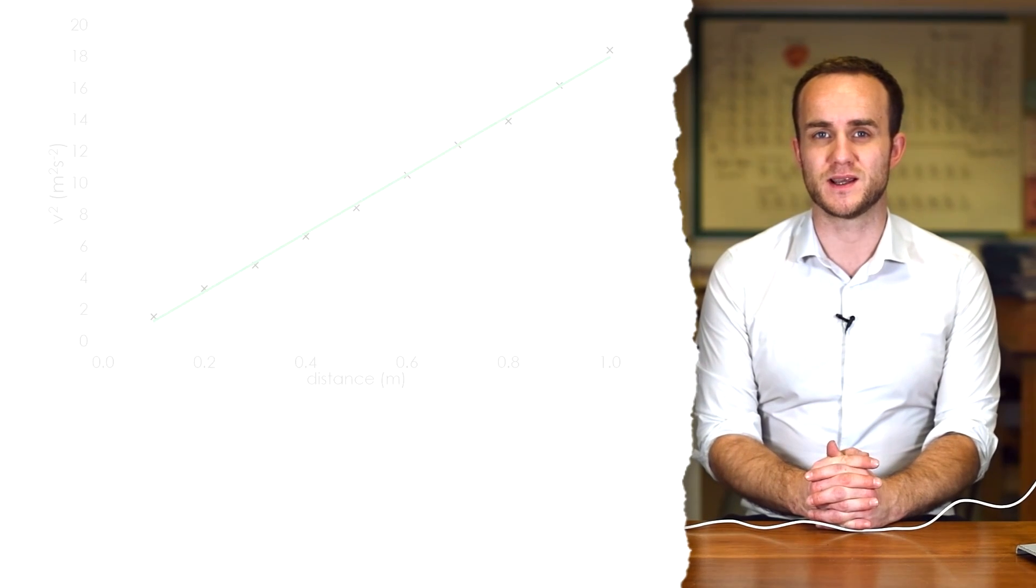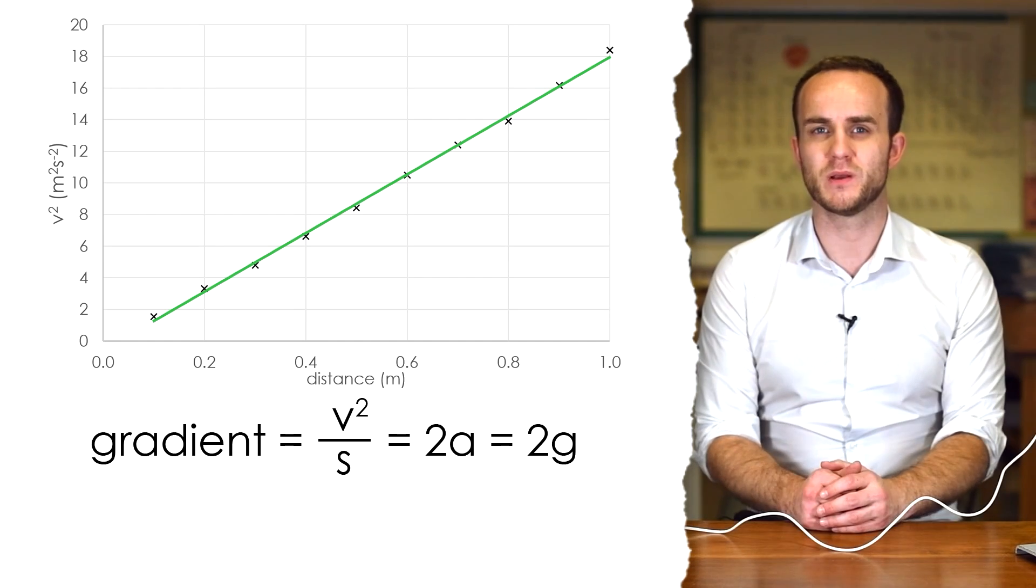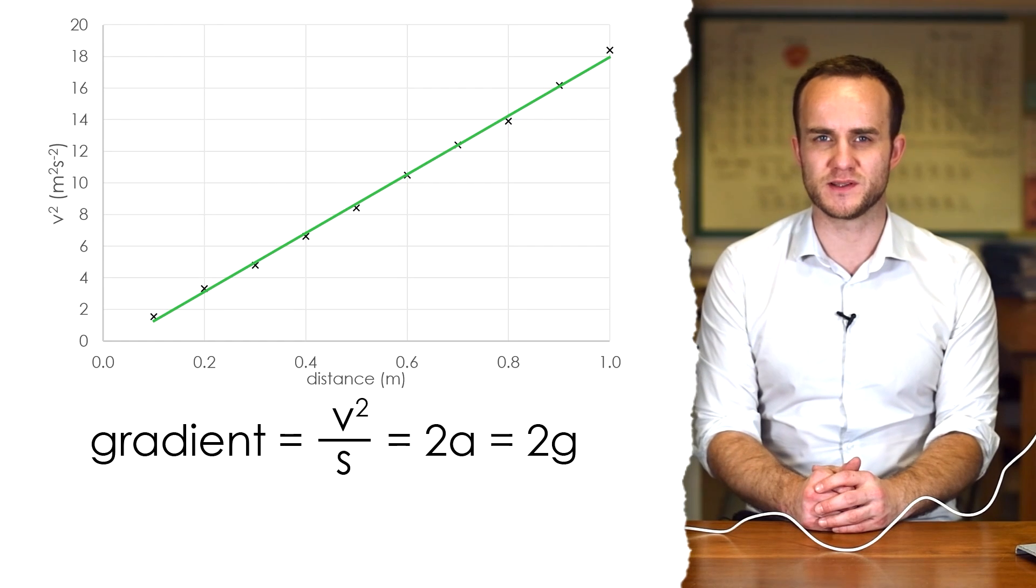Now if we plot the graph of V² against S and find the line of best fit's gradient, then we end up with V² against S. Now my gradient ends up being 18.6.